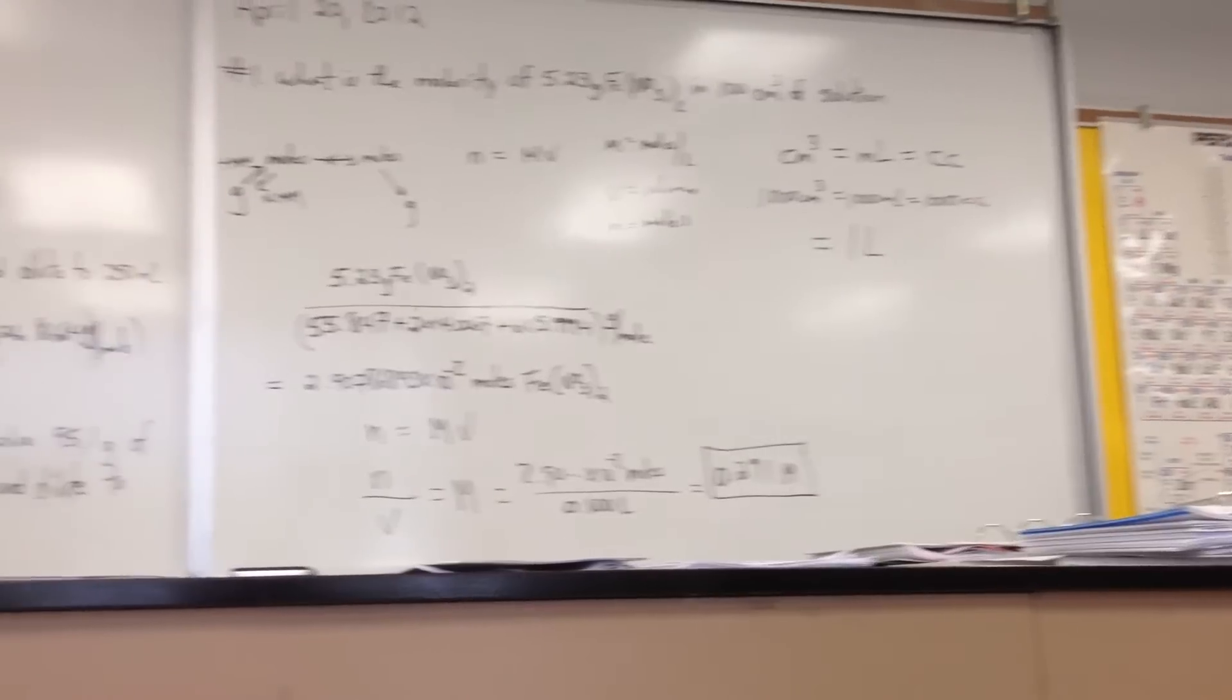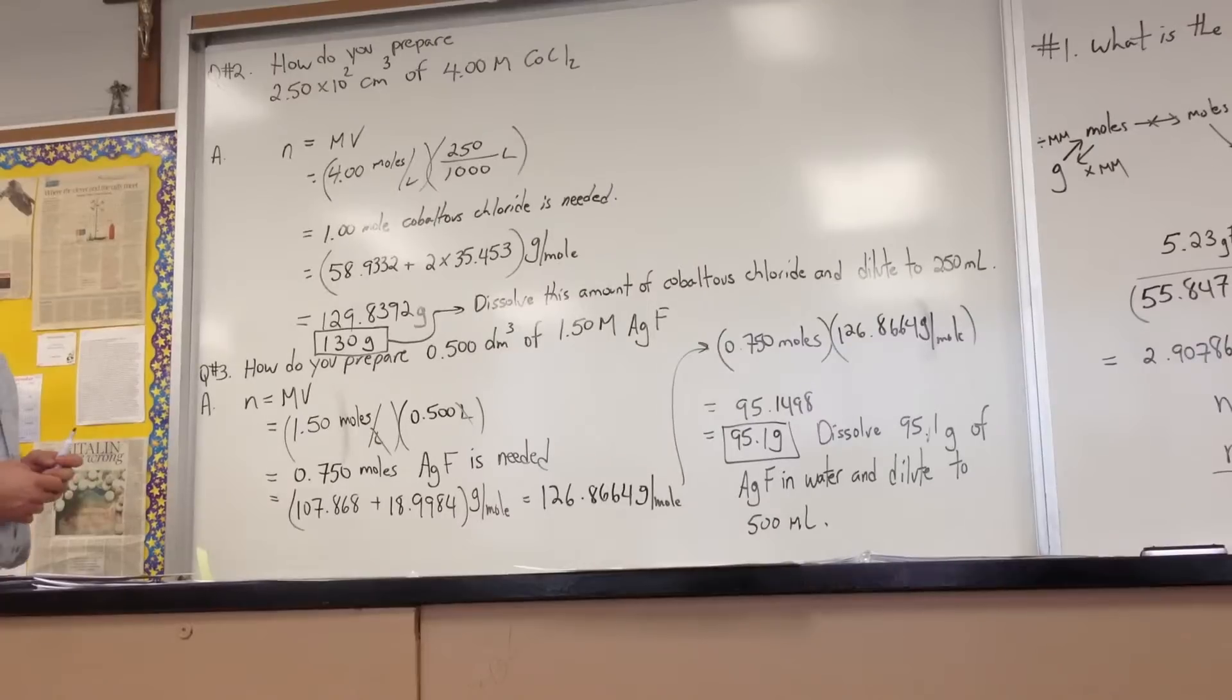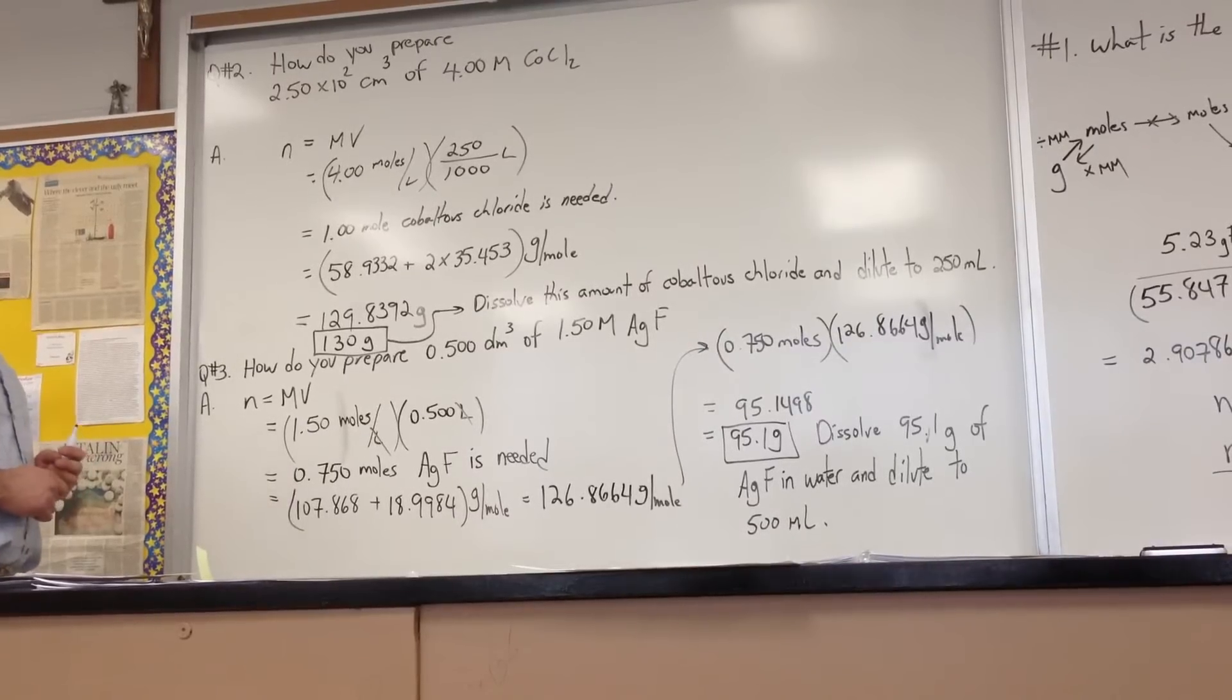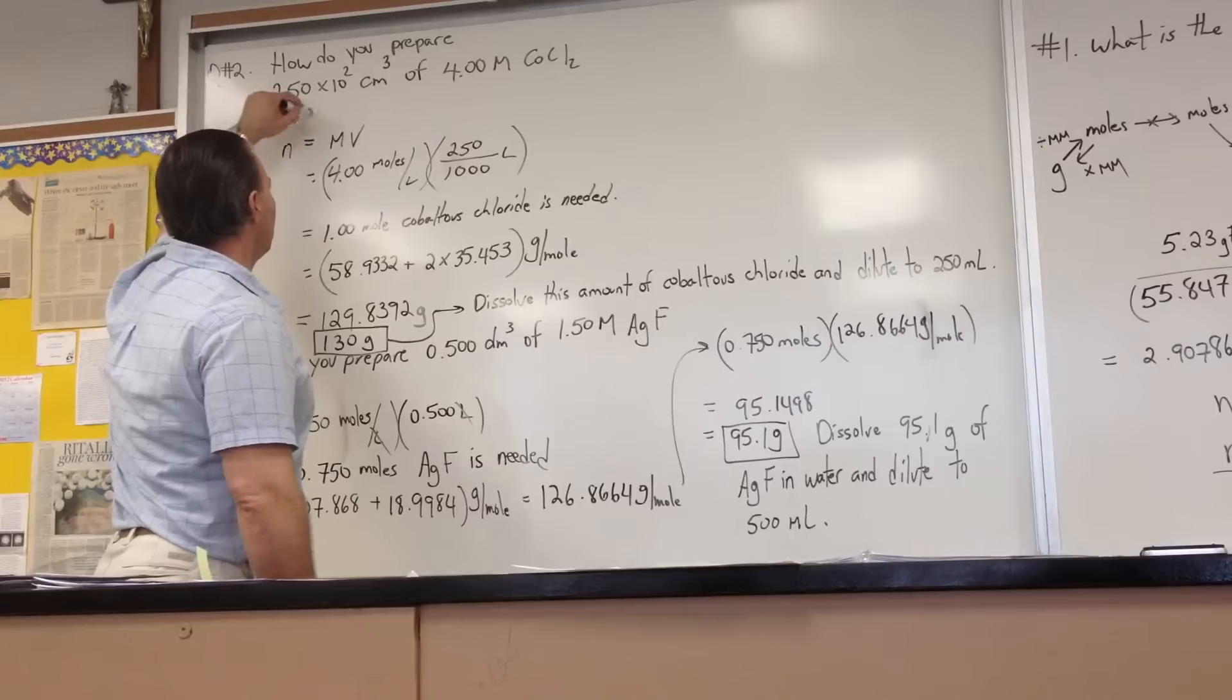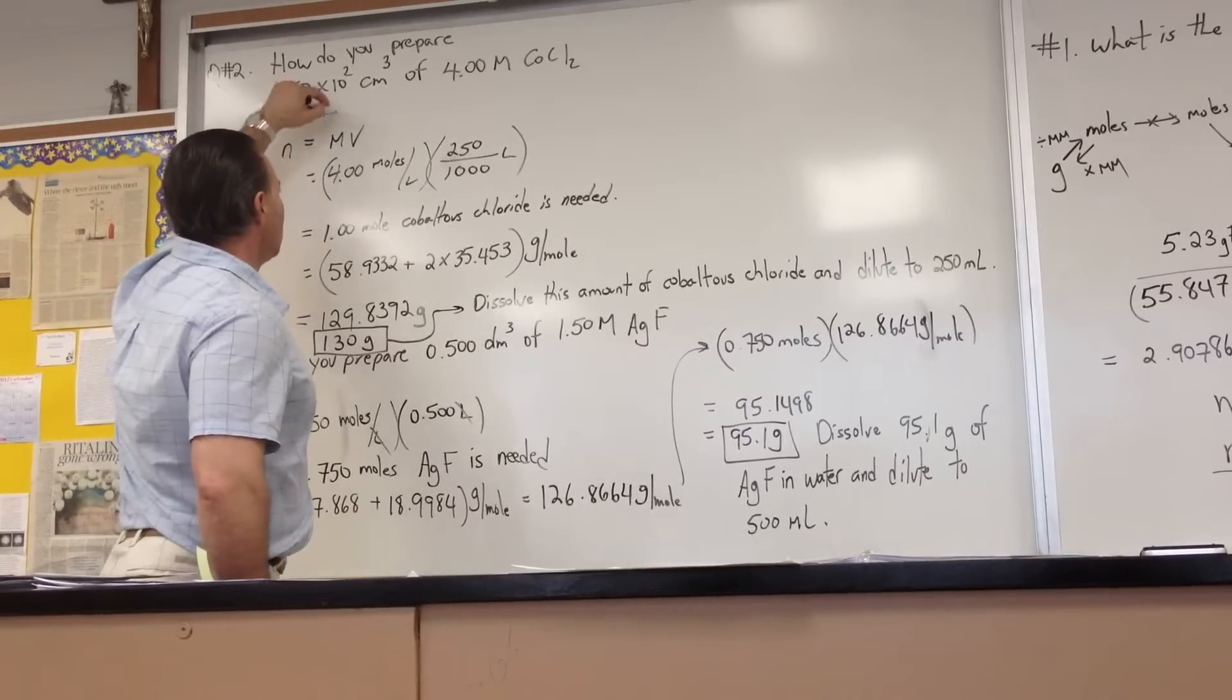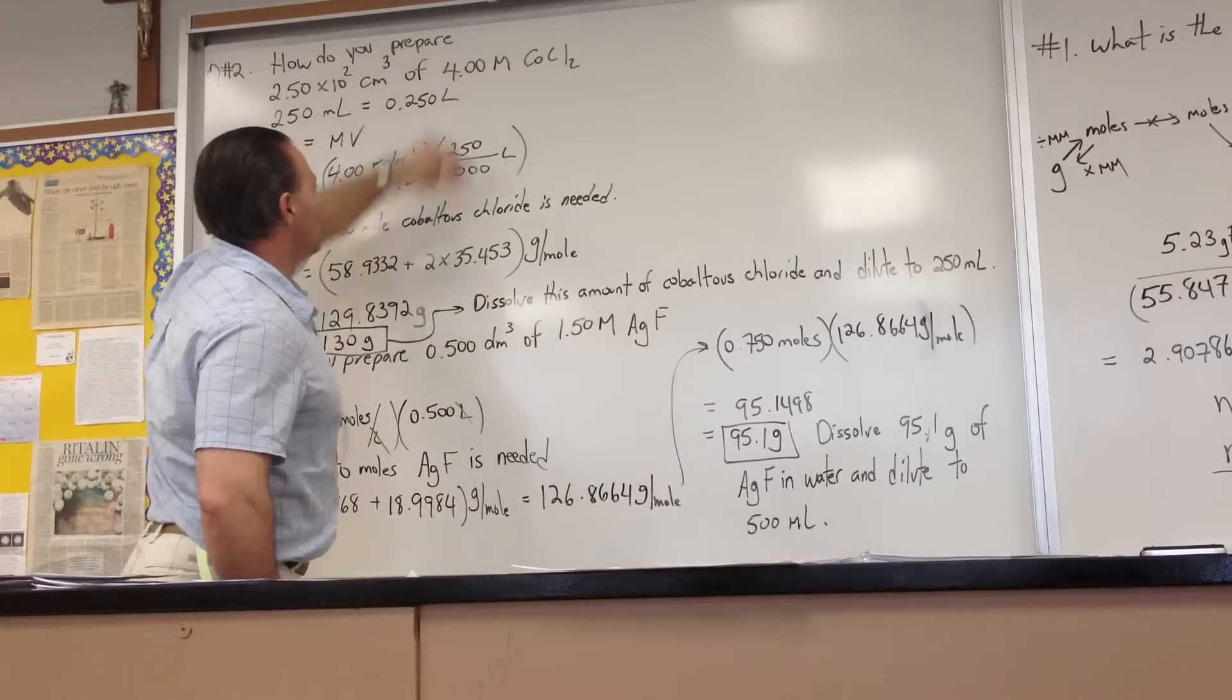In the second problem, we're asked, how do you prepare 2.5 times 10 to the 2 centimeters cubed of 4 molar cobaltis chloride? We have to recognize here that 250 centimeters cubed is equal to 250 mL, which also equals 0.250 liters.